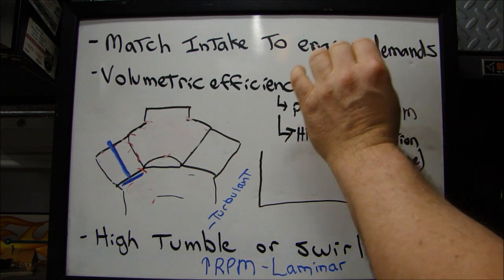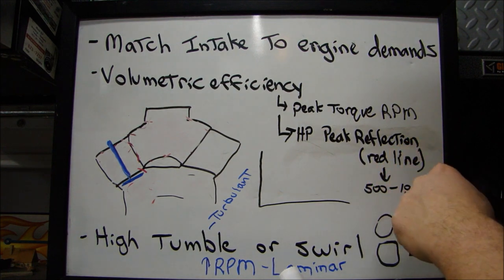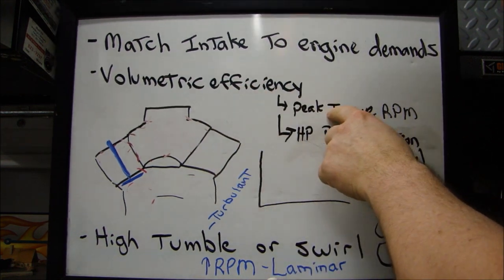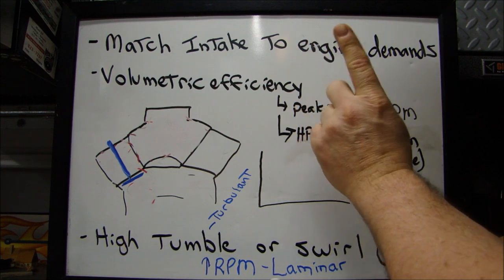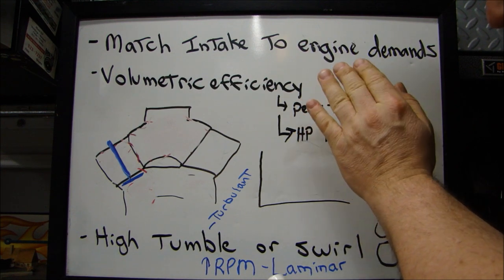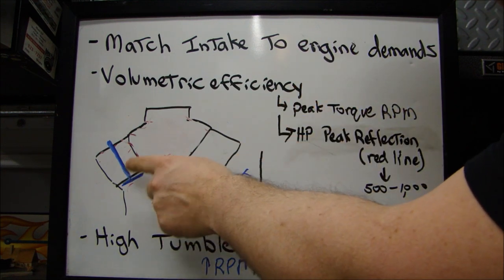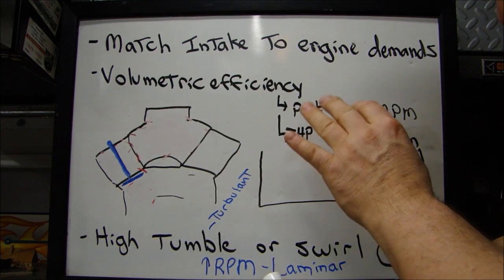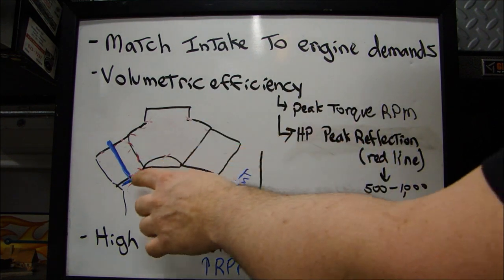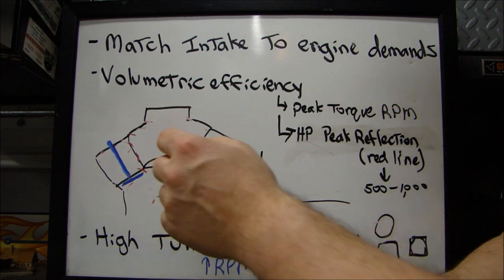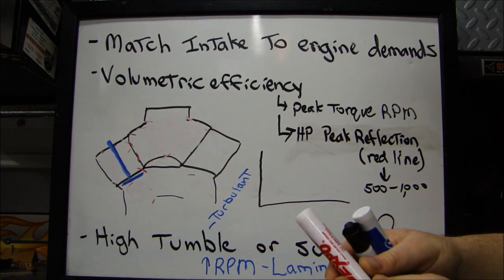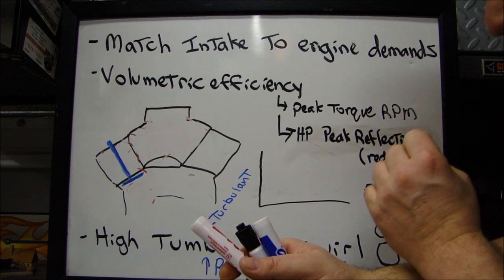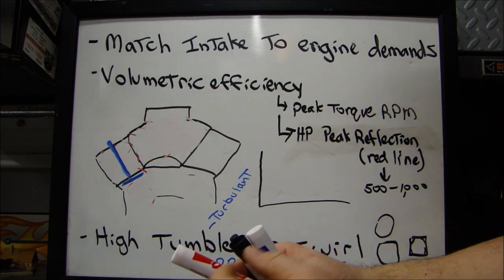An intake manifold can be used to boost the volumetric efficiency at certain RPM ranges through resonance — through the intake pulses. Resonance of the intake pulses in the intake system originates right at the intake valve. What I mean is we're boosting the volumetric efficiencies at certain RPMs. Let's say this is your RPM range starting at 100 RPM here, coming along as you give the throttle.